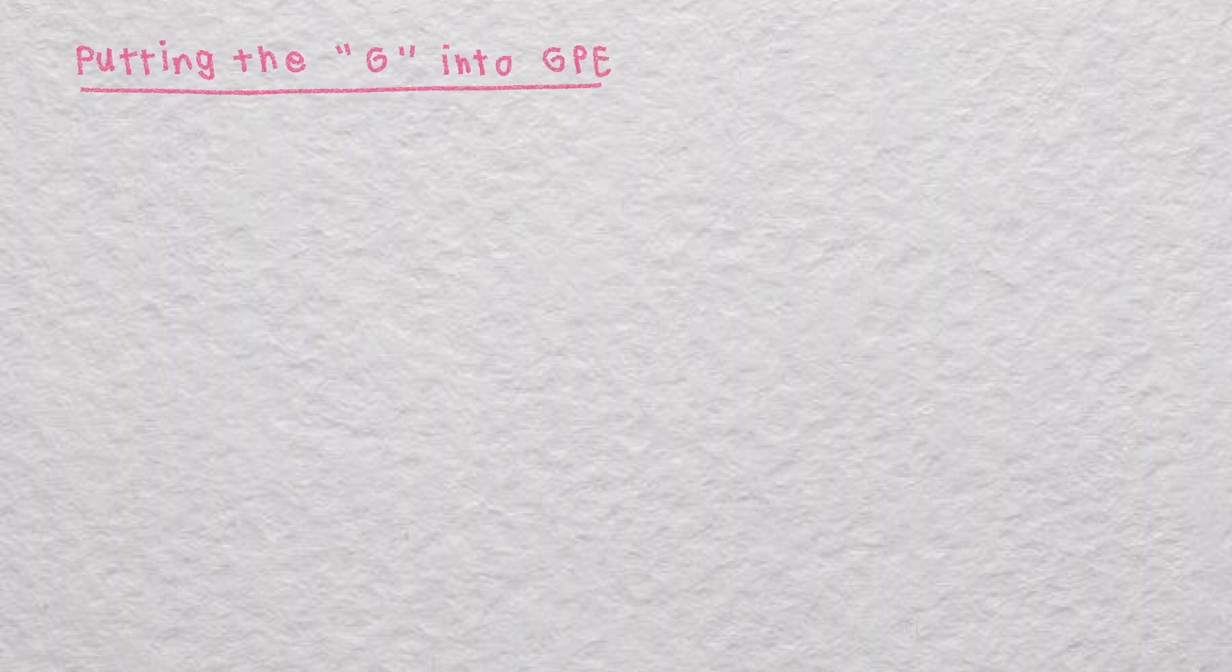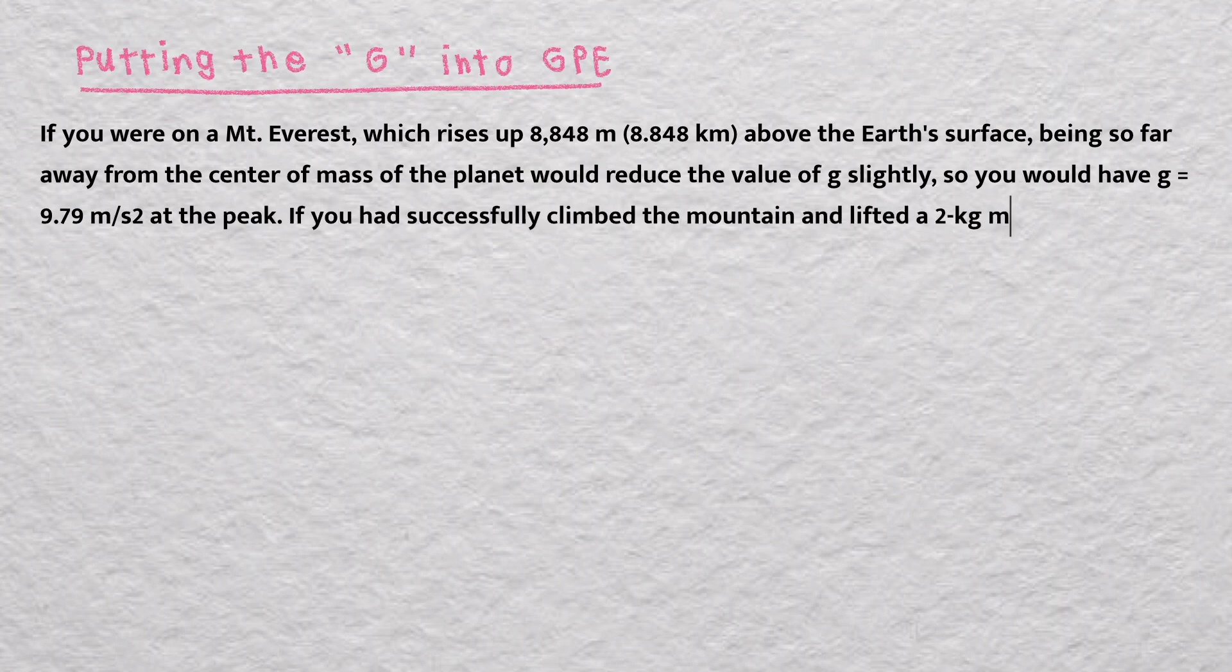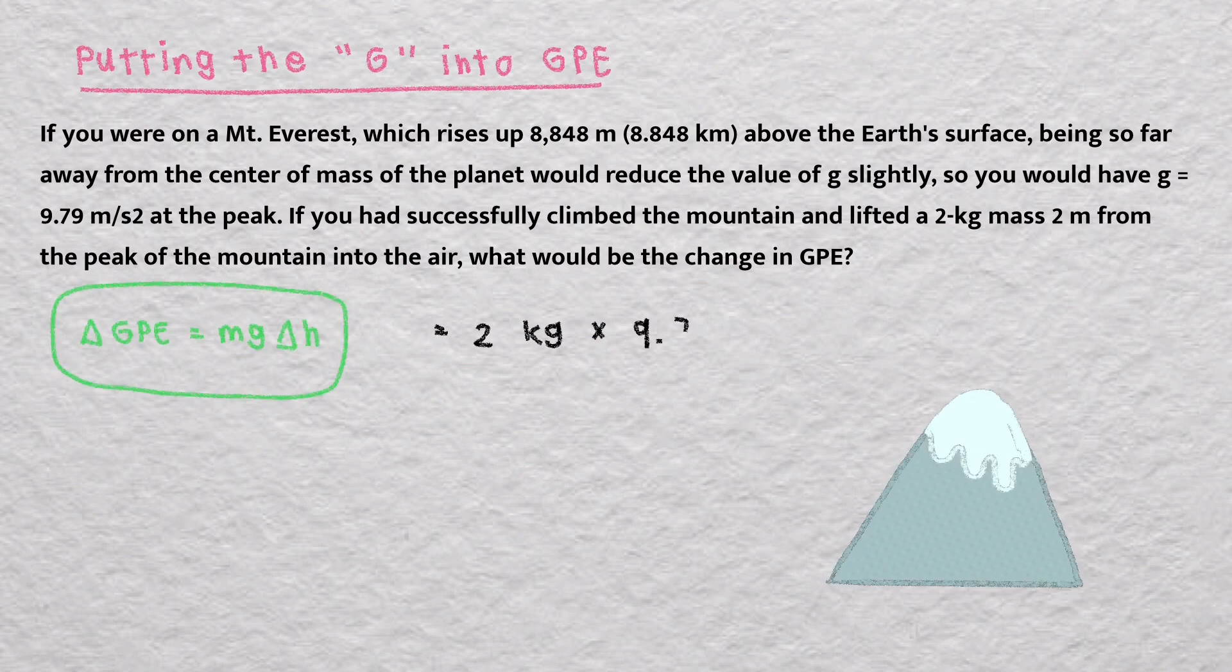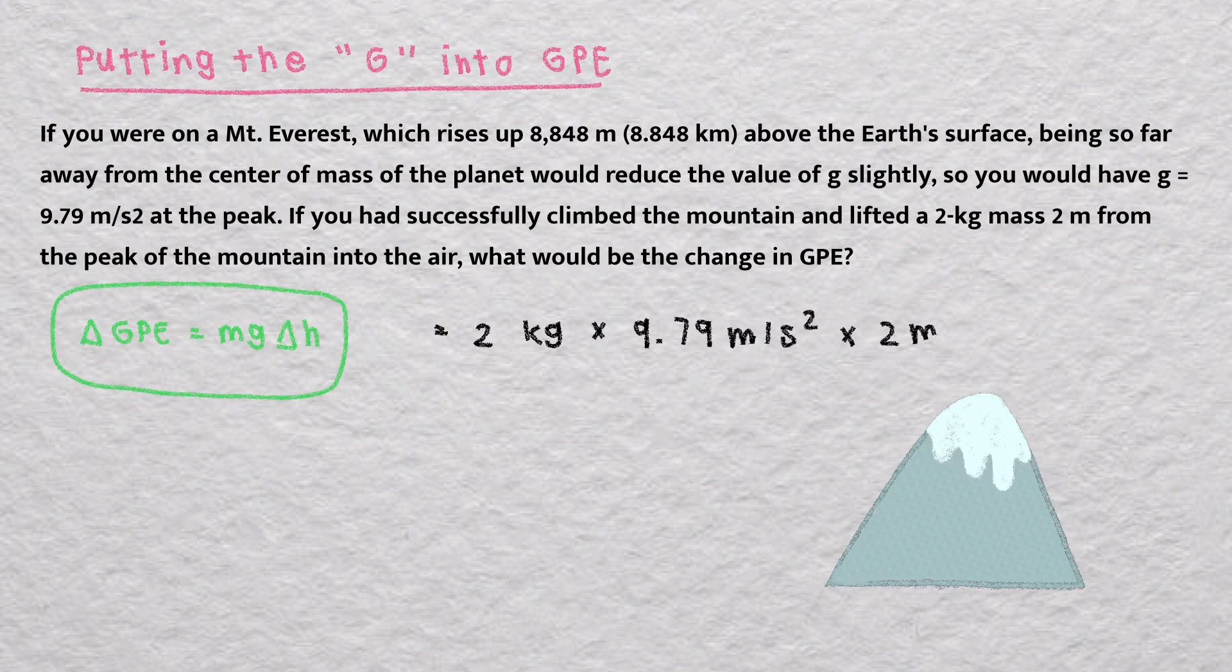So here's the next question. Putting the G into the GPE. If you were on Mount Everest which rises up to 8,848 meters above the Earth's surface, being so far away from the center of the mass of the planet would reduce the value of G slightly so you would have G equal 9.79 meters per second squared at the peak. If you had successfully climbed the mountain and lifted a 2 kg mass 2 m from the peak of the mountain into the air, what would be the change in GPE?